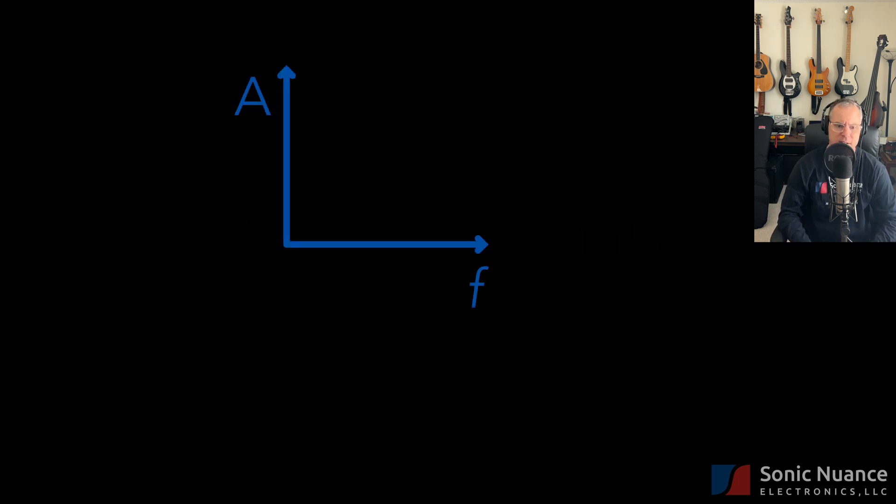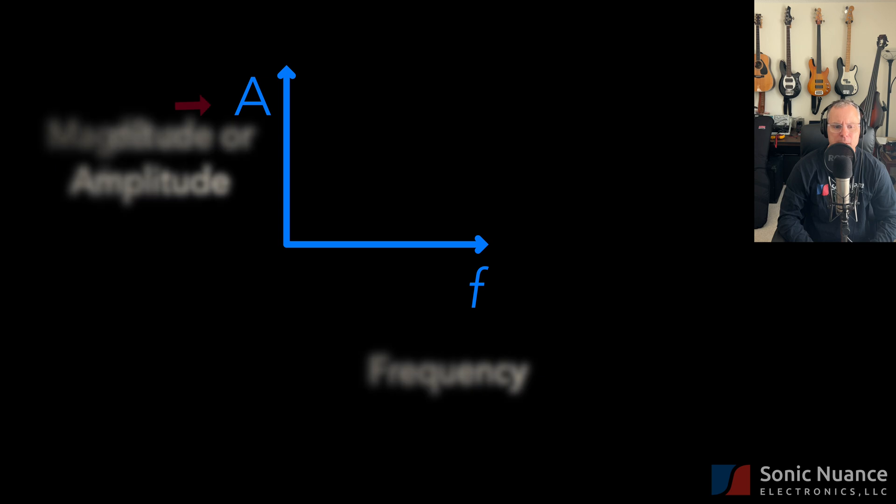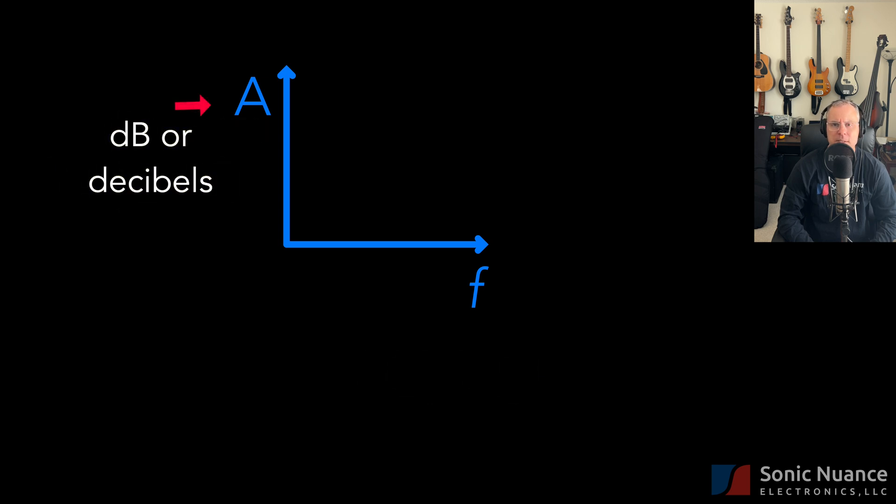First, let's discuss frequency response plots. A frequency response plot has two axes. The left here is magnitude or amplitude, and the bottom is frequency. There are various ways to measure amplitude, but you'll usually hear the term dB or decibels. It's simply a measurement unit like inches or miles.